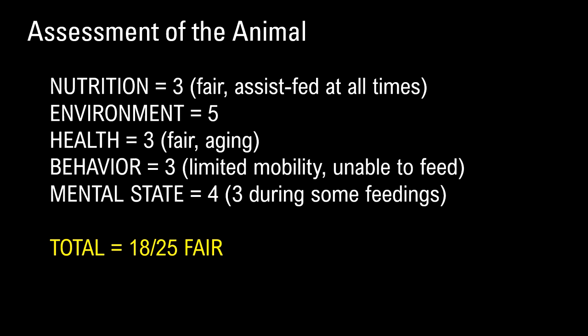For an old animal in this situation, health is going to be a three — you want to say five because they're in great health for their age, but in overall health, it's at a point where it's going to start decreasing. Quality of life will decrease with the inability to thermoregulate and access resources. The behavior had a relatively low score because of her inability to feed herself. She got enough food and we would never overstress her during feedings, but it was a strange situation. The ability to express natural feeding behavior is pretty important and basic.